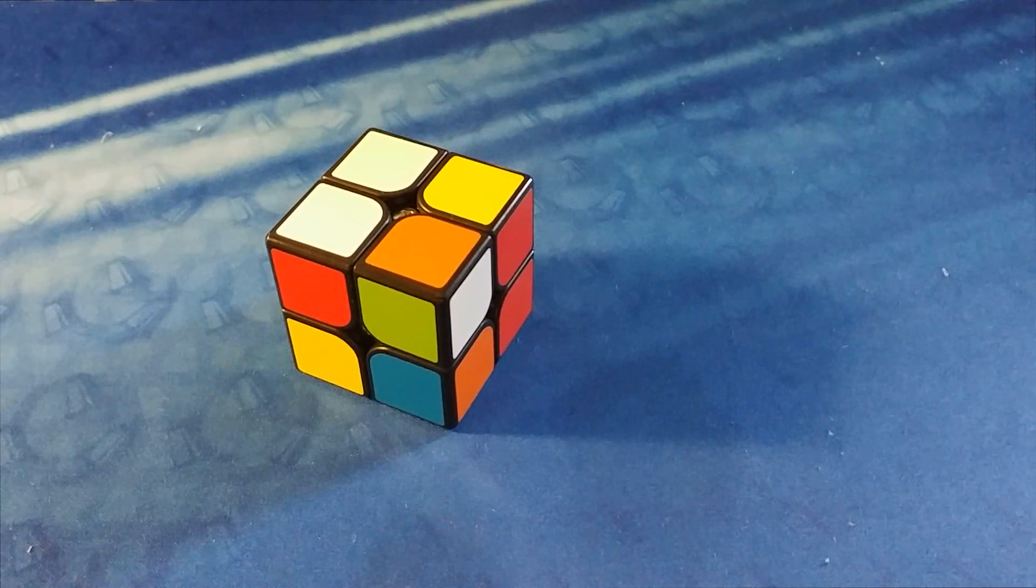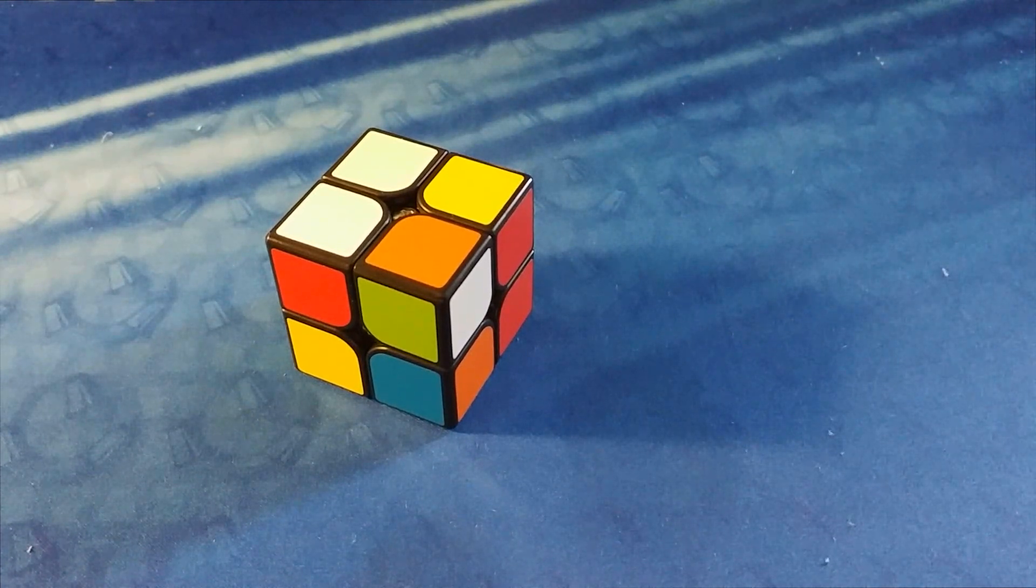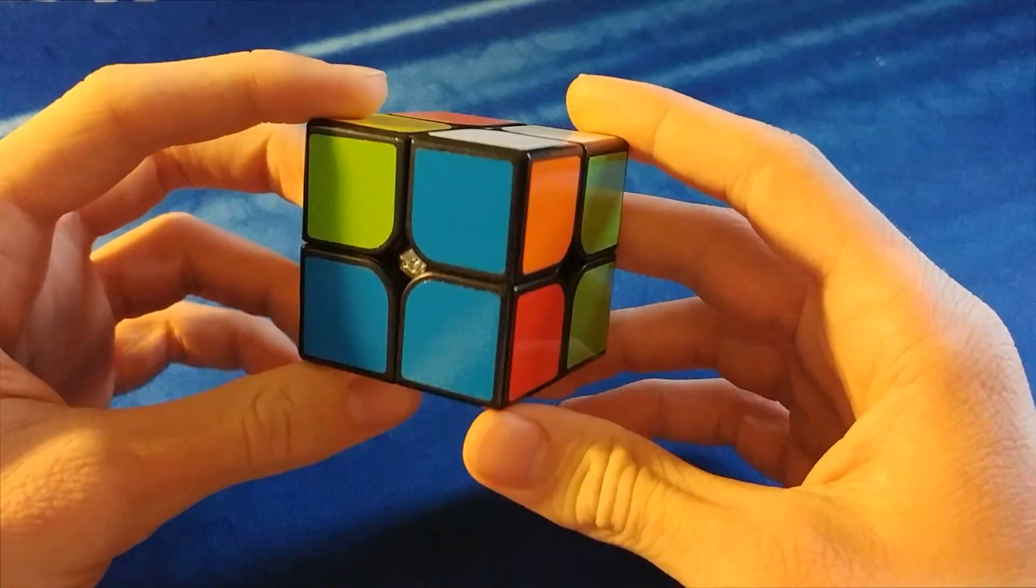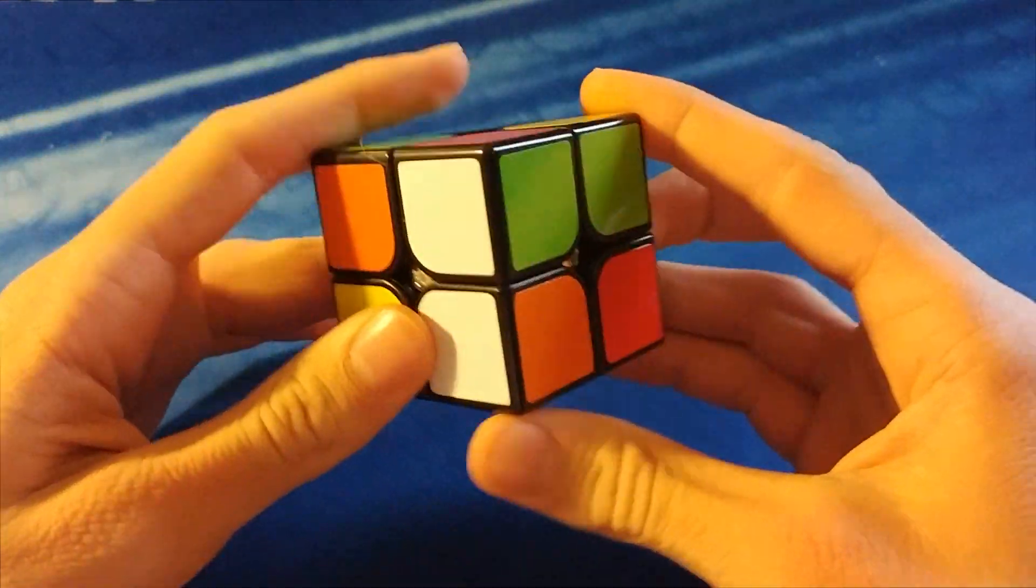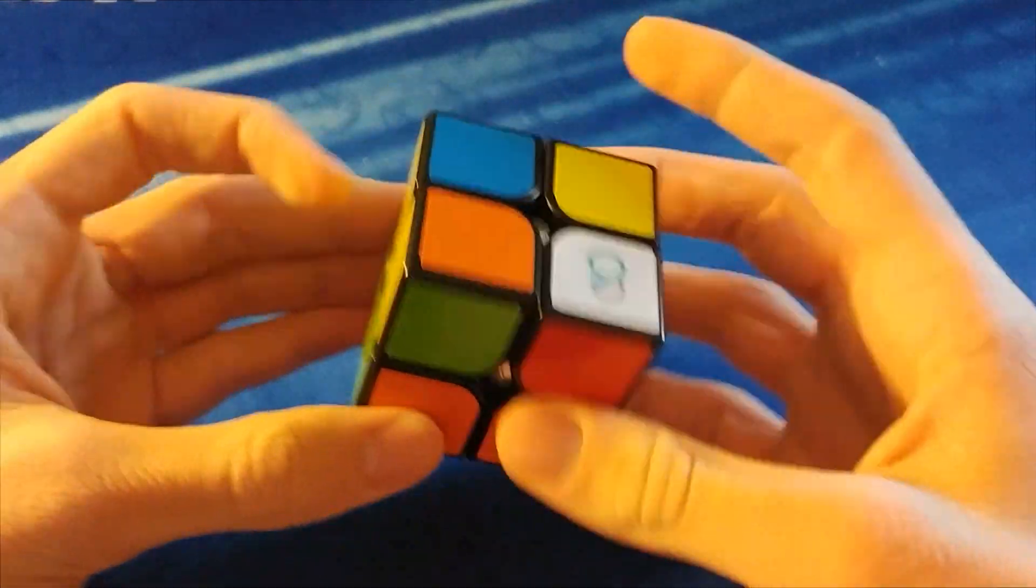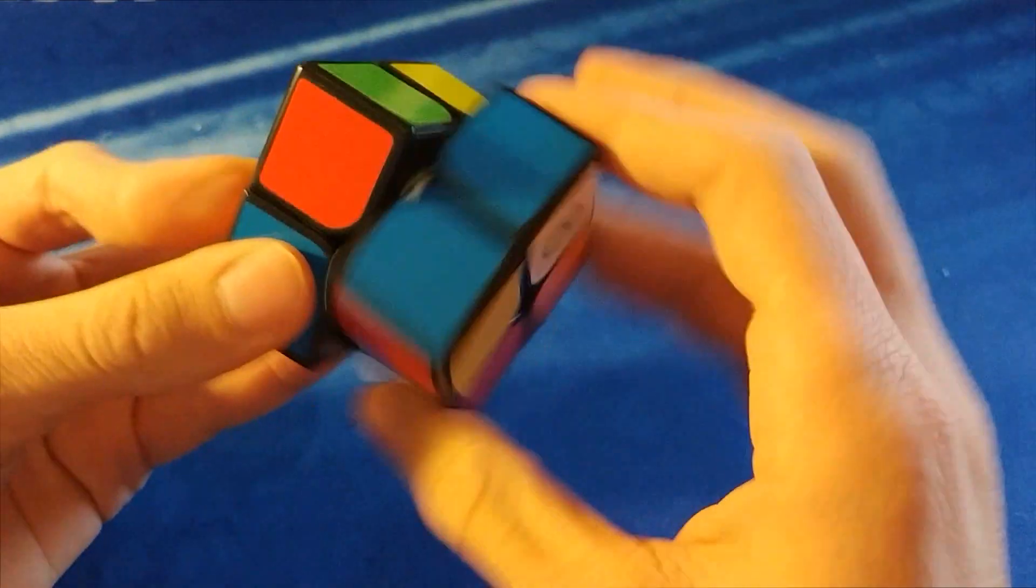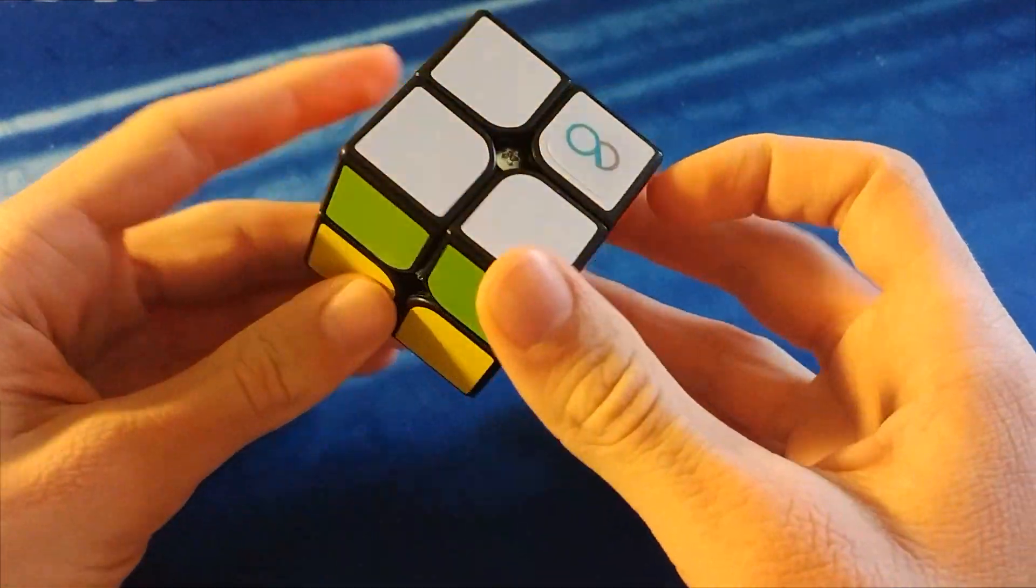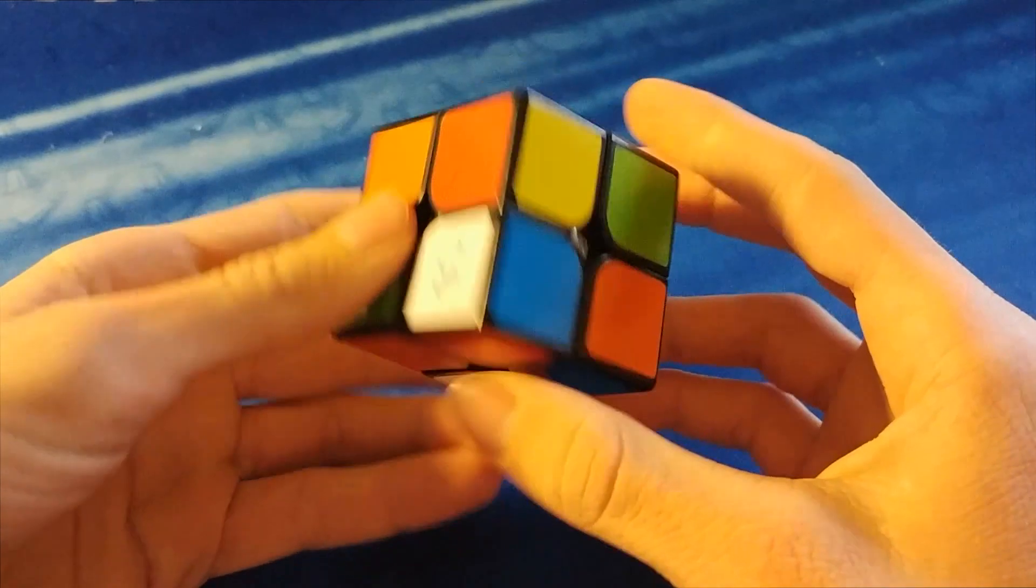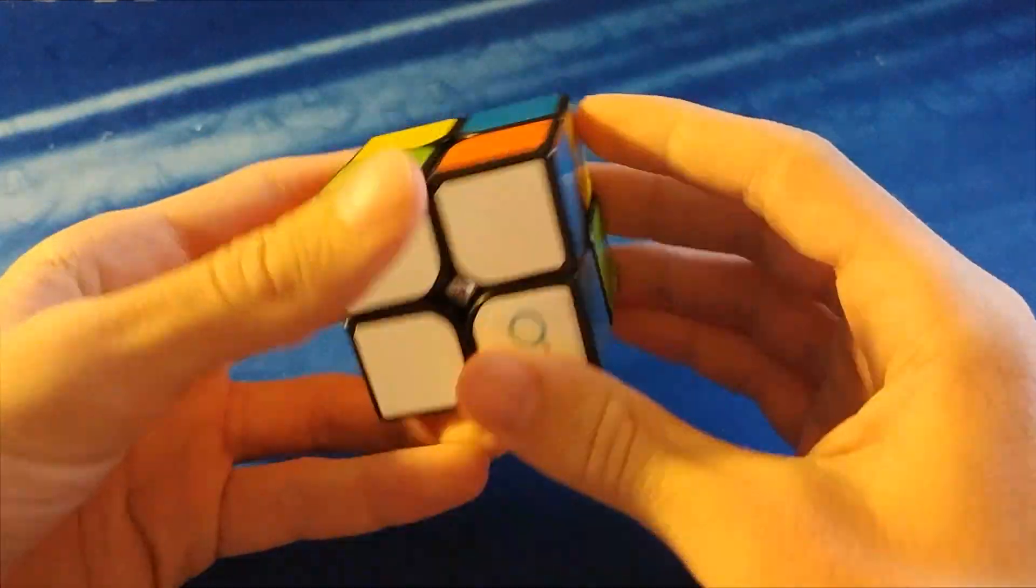So let's get into it. The first step is to solve one side. Now take note that I did say one side and not one layer. So if I were trying to build a layer, I could do something like this, which would solve a layer, but we're not trying to do that. We're only trying to solve one side.